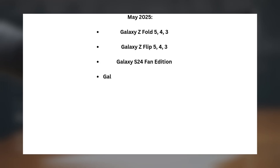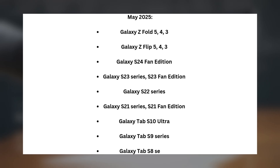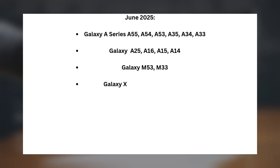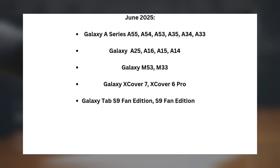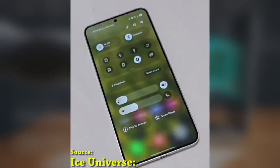The schedule includes: Galaxy S24 series, S23 Fan Edition, Galaxy S22 series, and Galaxy S21 series and Fan Edition. On the tablet side: Galaxy Tab S10 Ultra, Galaxy Tab S9 series, and Galaxy Tab S8 series. In June 2025, the Galaxy A series — A55, A54, A53, A35, A34, A33, A25, A16, A15, A14 — along with Galaxy M53, M33, Galaxy Xcover 7, Xcover 6 Pro, Galaxy Tab S9 Fan Edition, Tab S9 Fan Edition Plus, Galaxy Tab S6 Lite, Galaxy Tab Active 5, and Tab Active 4 Pro. In July 2025: Galaxy Tab S9 Plus and Galaxy Tab S9.